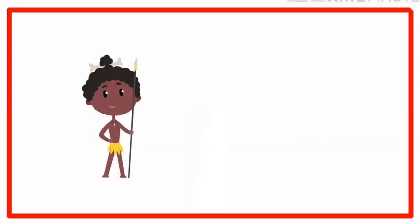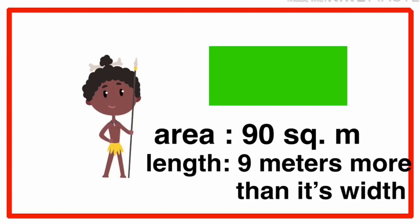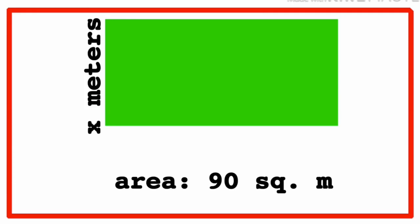Does it have any application in real life? Mervyn, who is an Aita, plans to make a rectangular petri garden with an area of 90 square meter and a length of 9 meter more than its width. If you are Mervyn, how would you make the garden? Imagine that this is the rectangular garden. The area is 90 square meter. If its width is x meters and based on the condition given, its length will be x plus 9 meters.